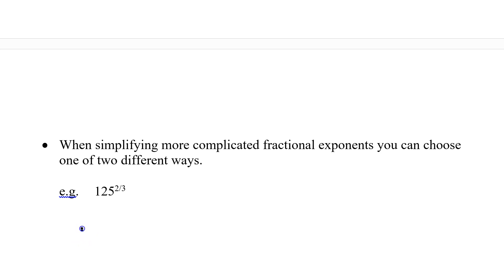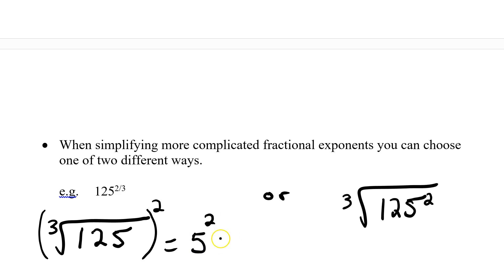I'm going to write out my base, 125. Throw on my root sign. And now I've got some options. I can take the denominator and put it as the index and calculate this, and then take the whole thing to the exponent of 2. The cube root of 125 is going to be 5. Then we have to square that. 5 squared is 25.